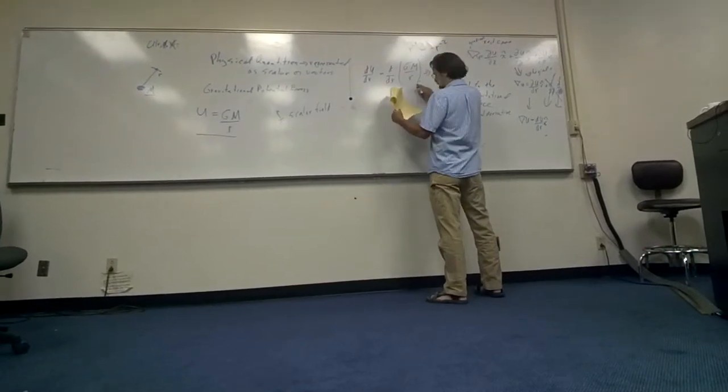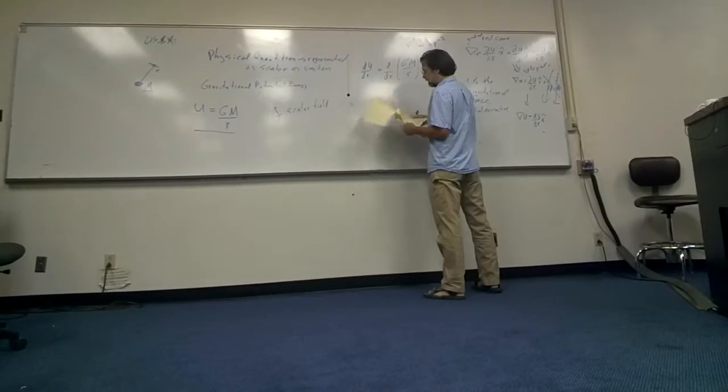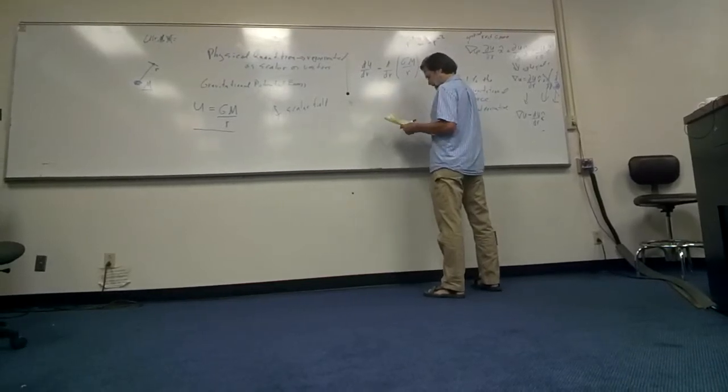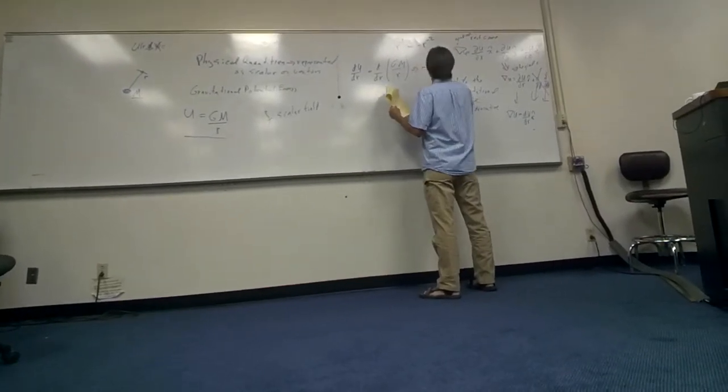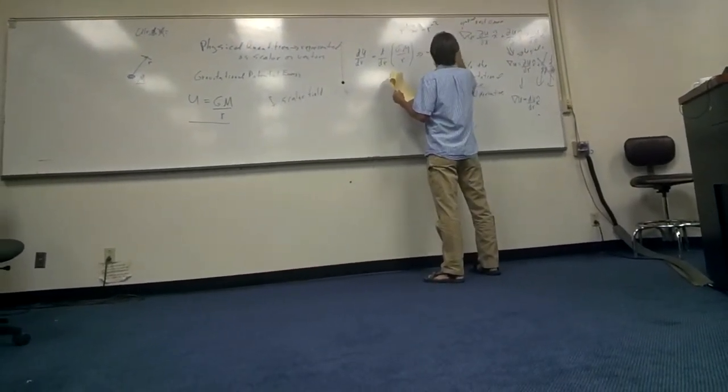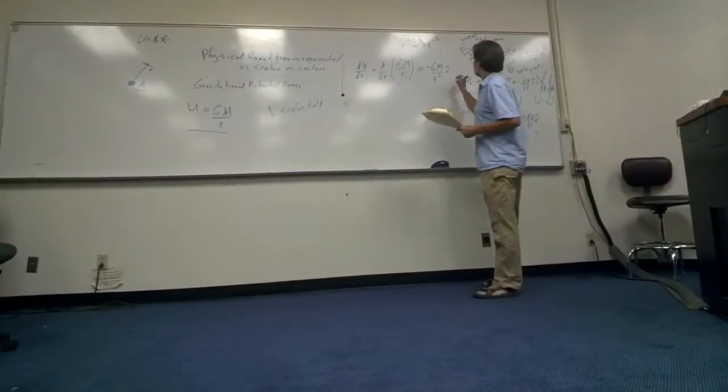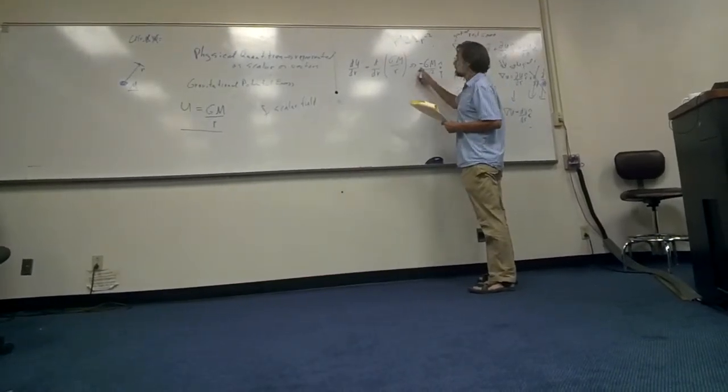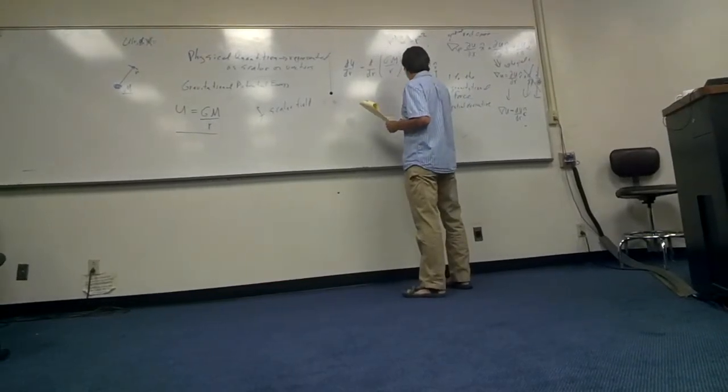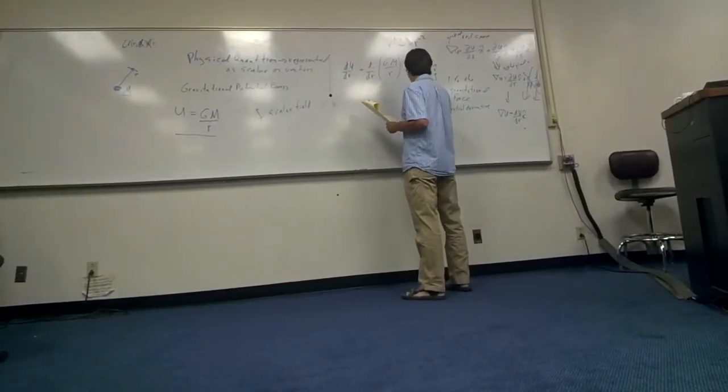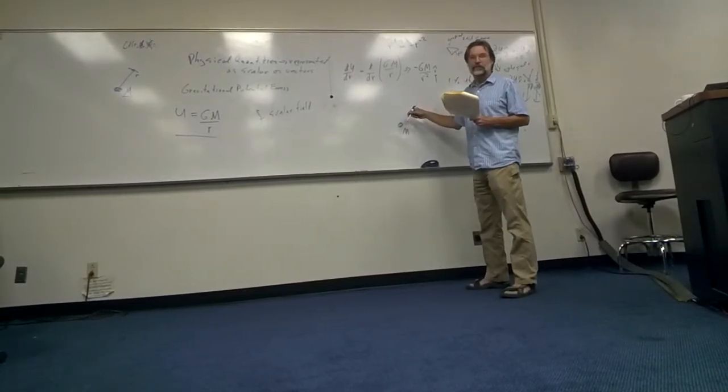So this becomes minus gm over r squared, r hat. The vector now points in the r direction, but it points in the negative r direction, right? So here's m, here's a point, there's g, points towards m.